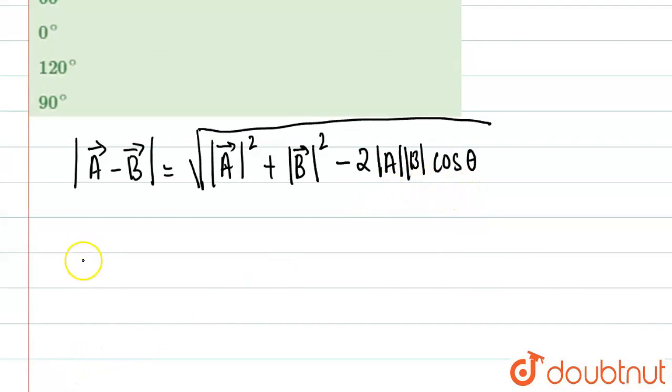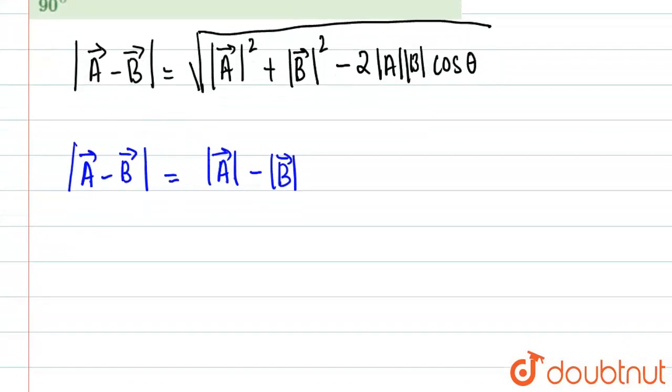So if we square both sides, squaring both sides, what we'll get basically is A² + B² minus...